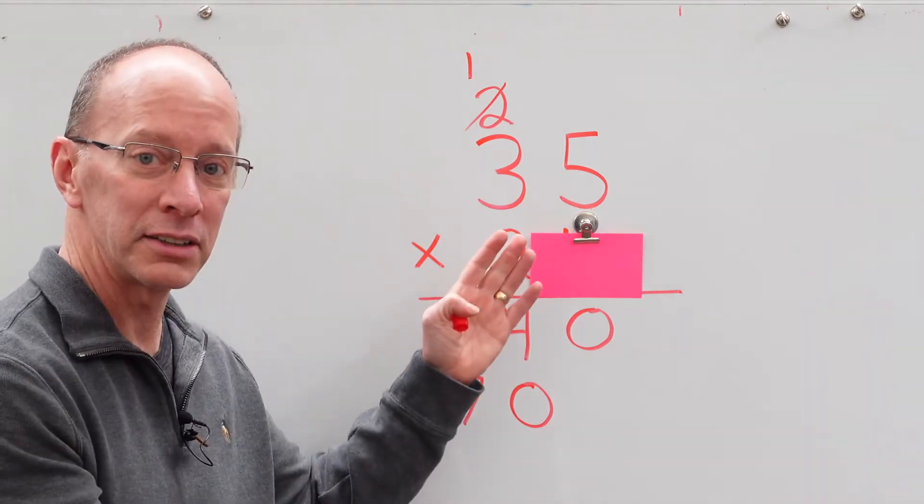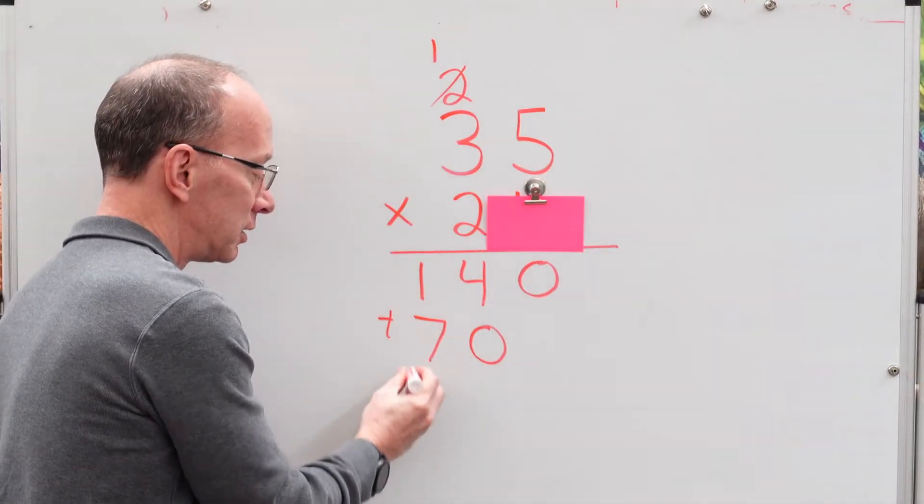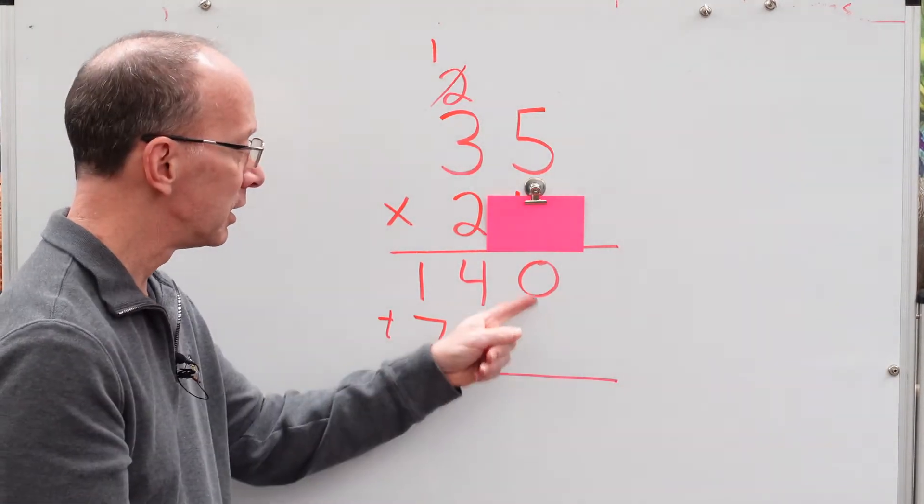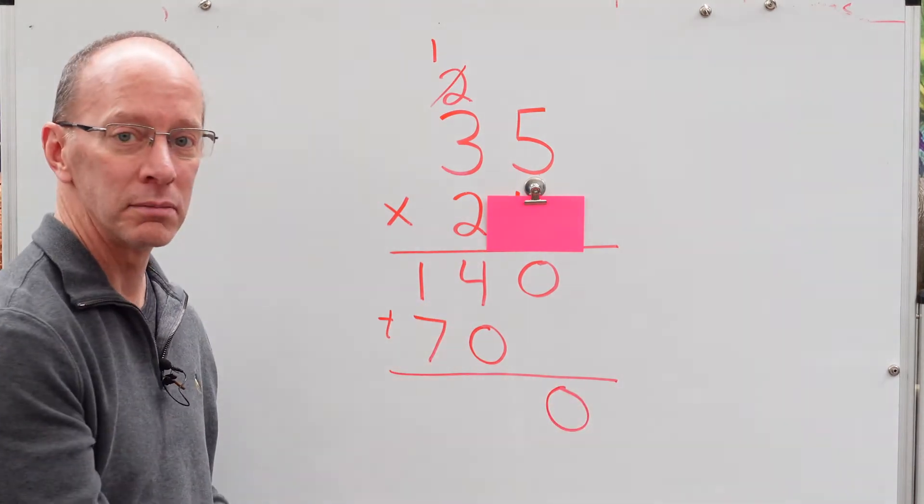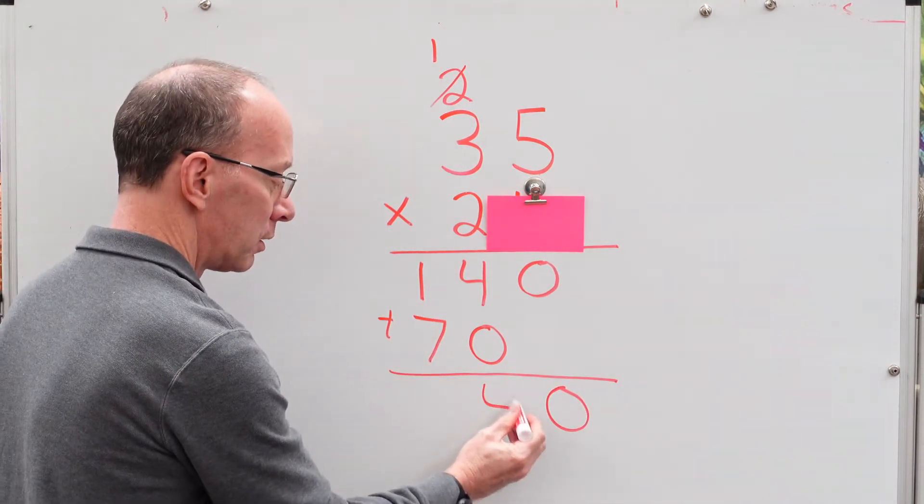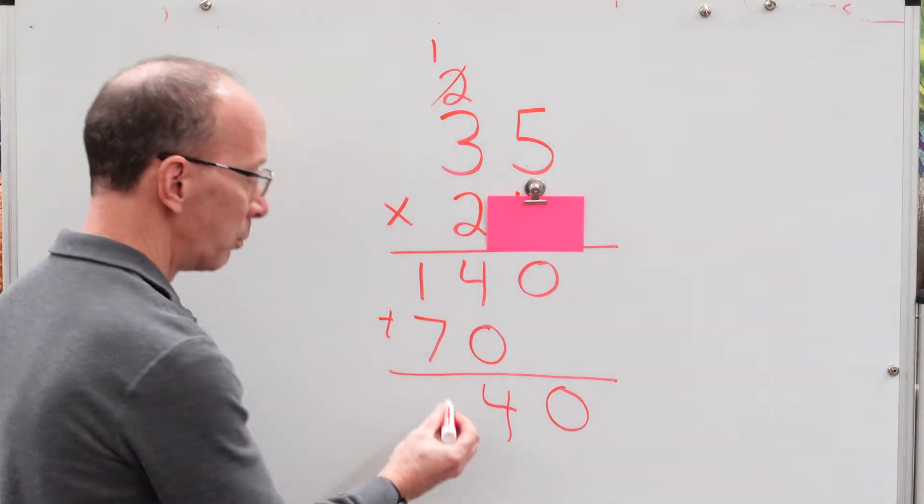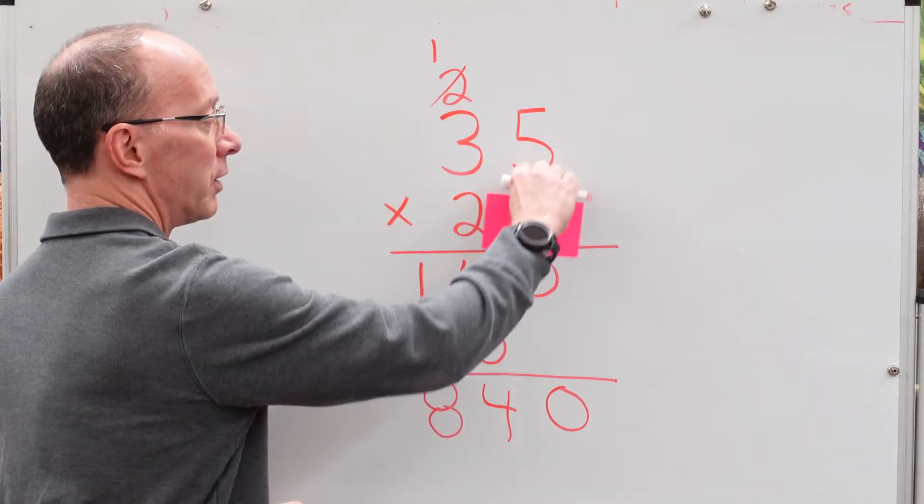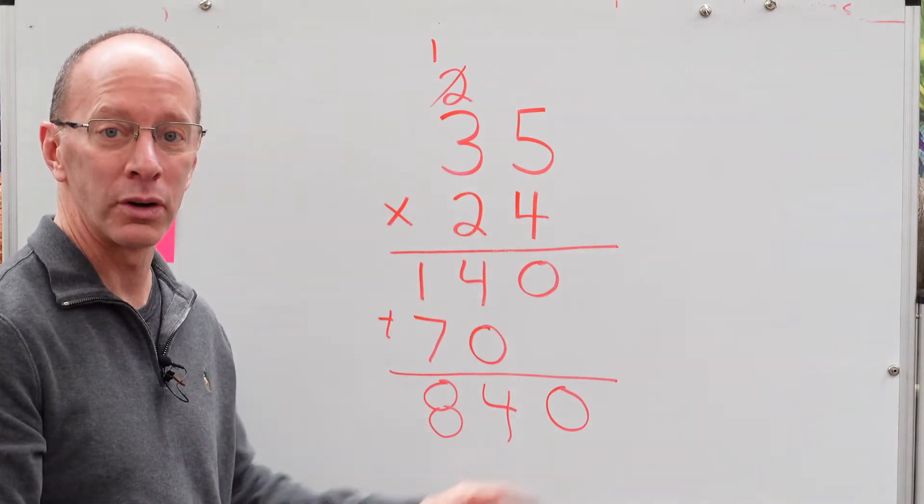Now, with multiplication, we use addition down here to find the answer. So let's go ahead and add these. Bring the 0 down. 4 plus 0, you got it, 4. And 7 plus 1, 8. 35 times 24 equals 840.